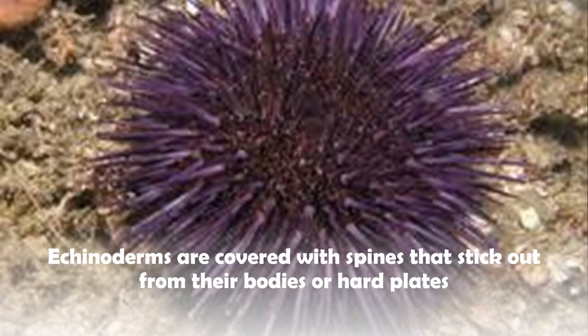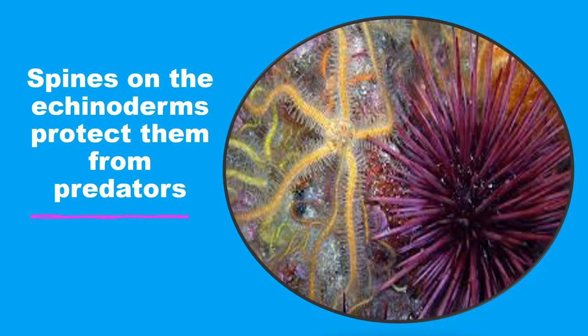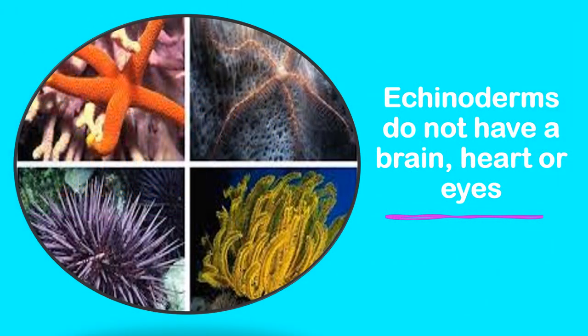Enkinoderms are covered with spines that stick out from their bodies or hard plates. It is with these spines that the animal is able to protect themselves from any predators. Like the sponge, an enkinoderm does not have a brain, heart, or even eyes.